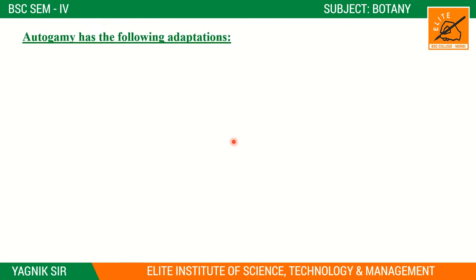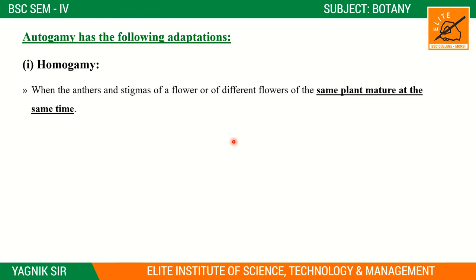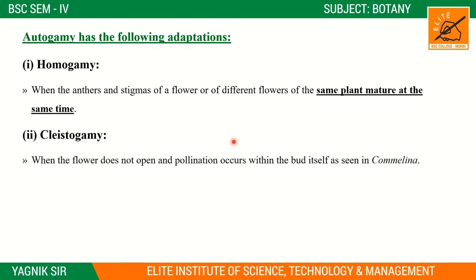Autogamy has the following adaptations. When the anthers and stigmas of different flowers of the same plant mature at the same time, that is homogamy. Then there is cleistogamy.